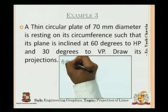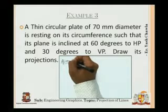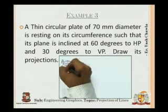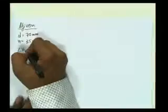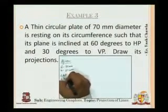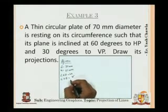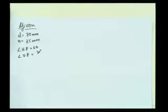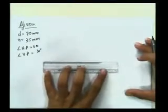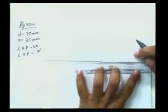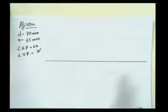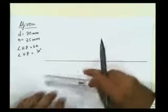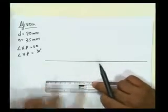The given data: a circular plate of diameter 70mm, so d = 70mm and r = 35mm. The angle with HP is 60 degrees and the angle with VP is 30 degrees. We'll first take the angle with VP, then with HP. When these kinds of problems arise, always remember to start drawing from the left-hand side of the sheet so it doesn't go out of bounds, since we'll need three figures across the paper.